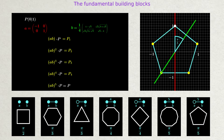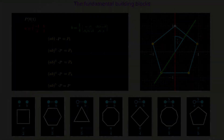What changes when we go to three dimensions? The mirror lines turn into planes. Instead of two lines, now three planes are needed to create three-dimensional shapes. There are now three dots in the Coxeter-Dynkin diagram that correspond to the three planes of reflection. The following examples show how our knowledge from two dimensions helps to understand the shapes and the composition of the three-dimensional solids.